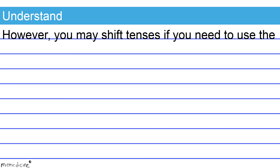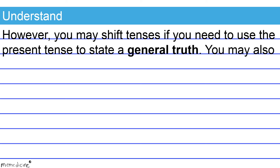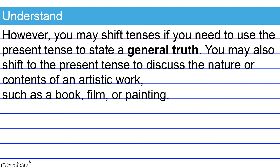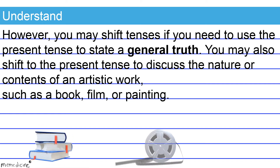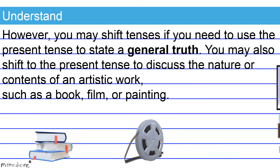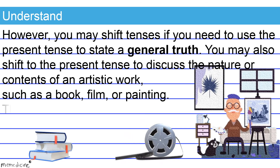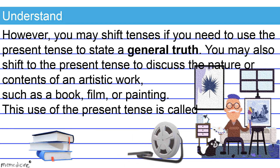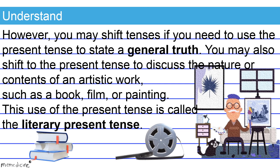However, you may shift tenses if you need to use the present tense to state a general truth. You may also shift to the present tense to discuss the nature or contents of an artistic work, such as a book, film, or painting. This use of the present tense is called the literary present tense.